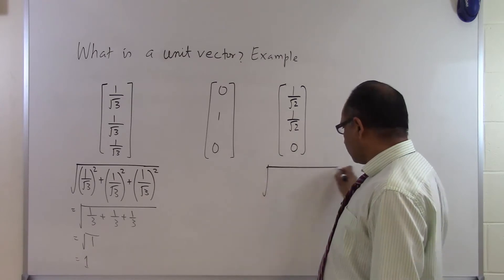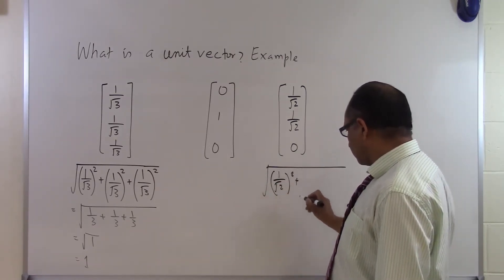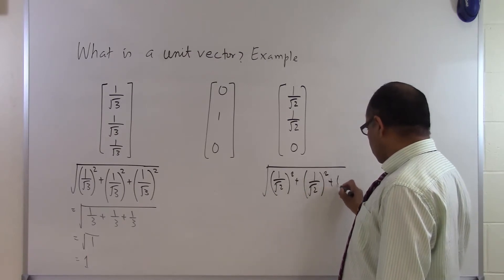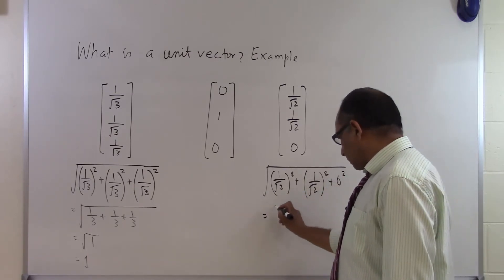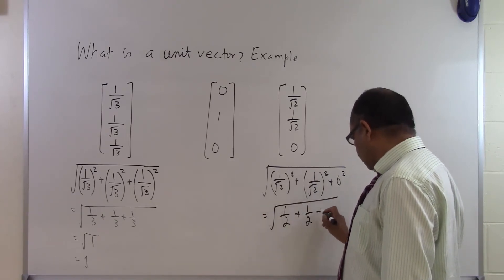So for example, in this case I will square each of the components: 1 by square root of 2 squared, 1 by square root of 2 squared, plus 0 squared. So I get square root of 1 by 2 plus 1 by 2 plus 0.